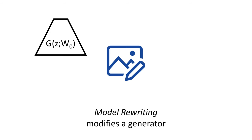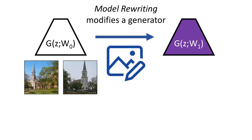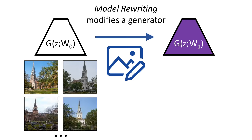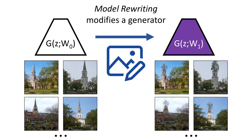As input, we take a deep generative model G(Z) that starts with weights W0, the pre-trained G. It maps a random input vector Z to a realistic image. Then, as output, we produce a changed model with weights W1. Since a model makes an infinite set of images, changing the rules of the model lets us create an infinite set of changed images that follow new rules. For example, this lets us have trees on all the towers.